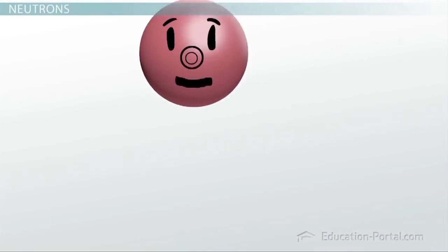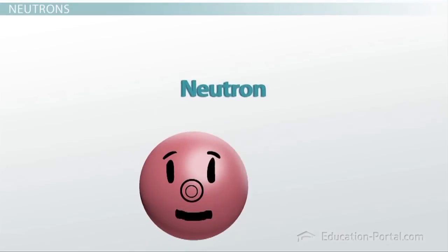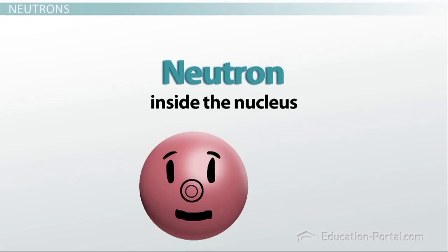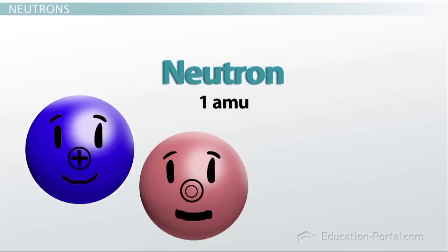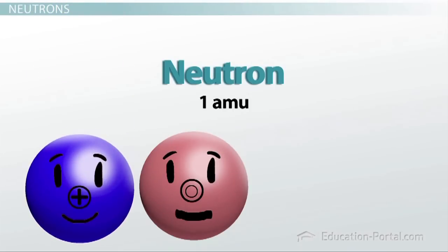The next particle inside the atom is called the neutron. Just like protons, neutrons are located inside the nucleus of an atom. Neutrons also have a mass of about 1 amu. So, protons and neutrons are both located inside the nucleus, and they both have a mass of about 1 amu.